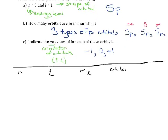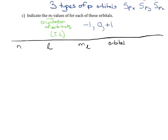Let's start with the smallest possible value of n. The smallest value we can have for n is 1, so that's our lowest possible energy level. When n equals 1, the only possible value for l is 0, because l is equal to n minus 1. The only value for m sub-l is also 0, because m sub-l equals plus or minus l. So if l equals 0, the only value for m sub-l is also 0. This would be a 1s orbital.